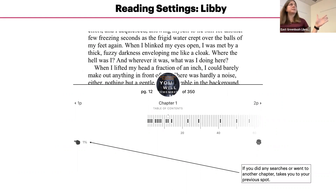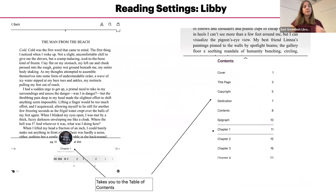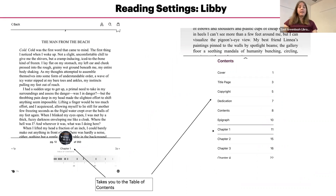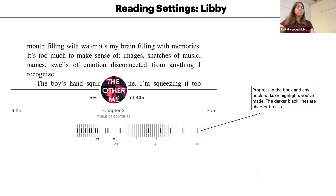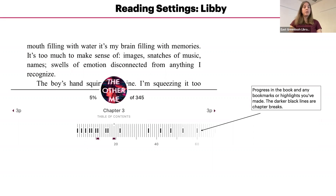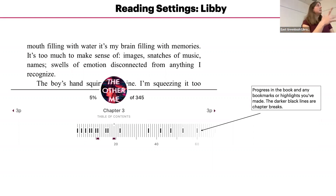That's the easiest way to get back to where you just were. Tapping on the table of contents will bring it up and allow you to easily skip ahead or back to a particular chapter. The center bar with the lines shows your progress in the book, along with any bookmarks or highlights you've made. The darker black lines are chapter breaks. You can also skip forward or back by dragging that bar to the right or left — it's an easy way to scroll really fast through the book.